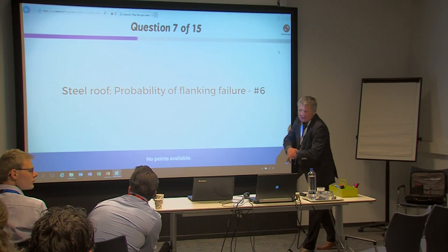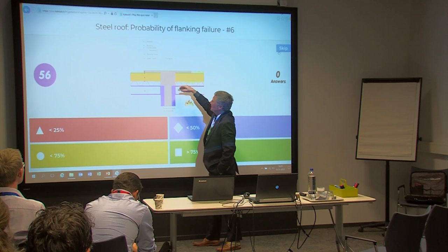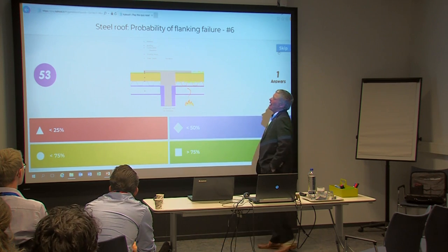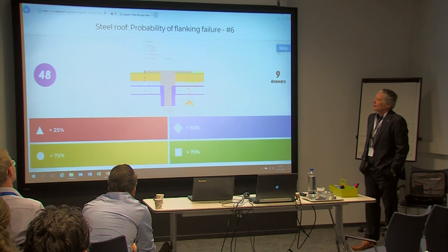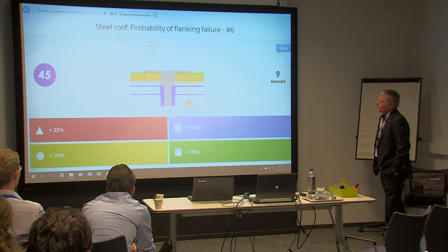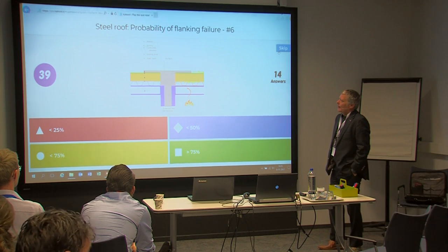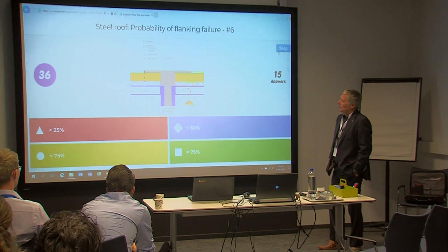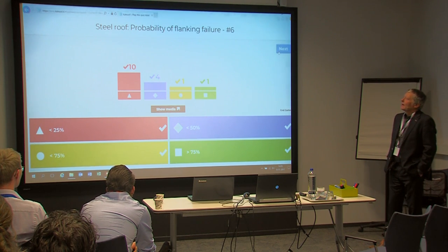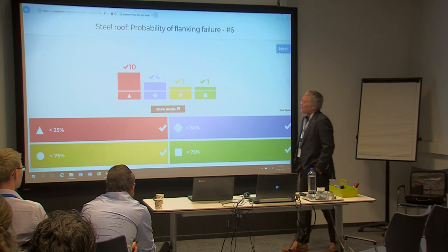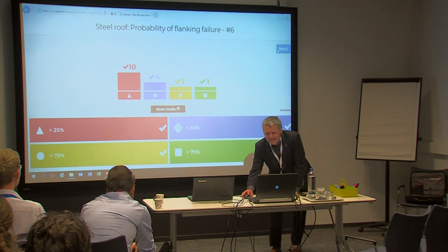The last roof detail is similar to the previous but with combustible layers and a real fire block, creating two separate constructions. Same question: what's the influence of flanking heat transfer along the compartment wall? Results show slightly less spread than the previous detail, which is remarkable.